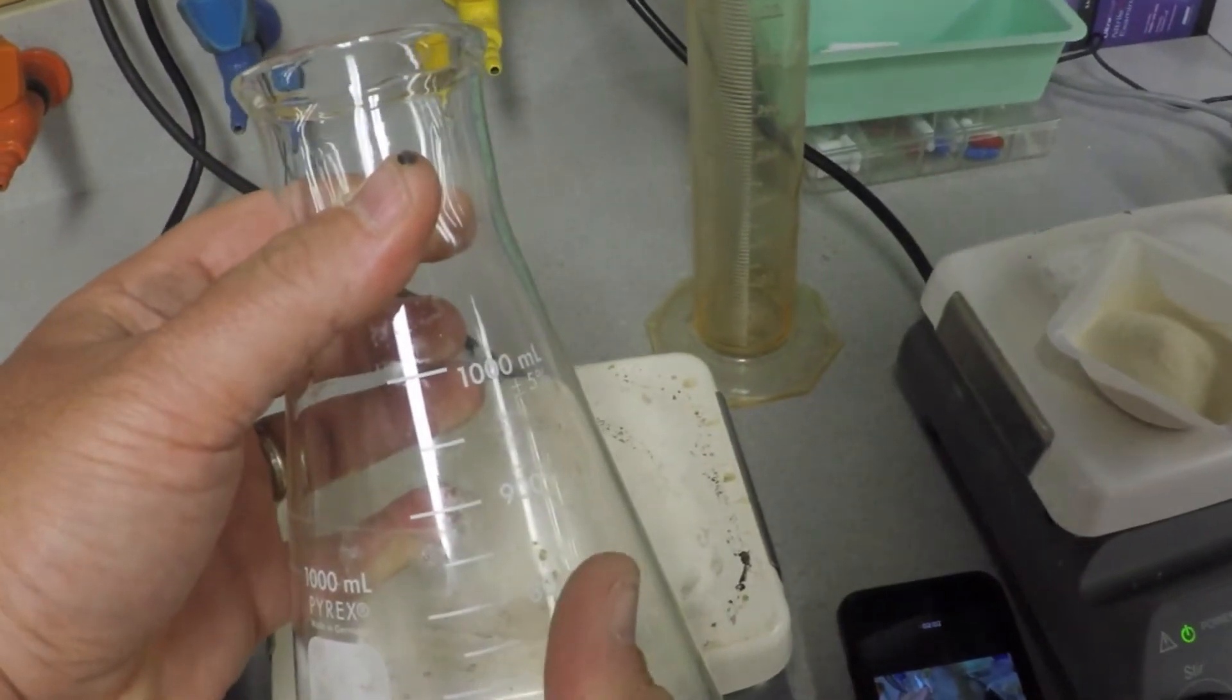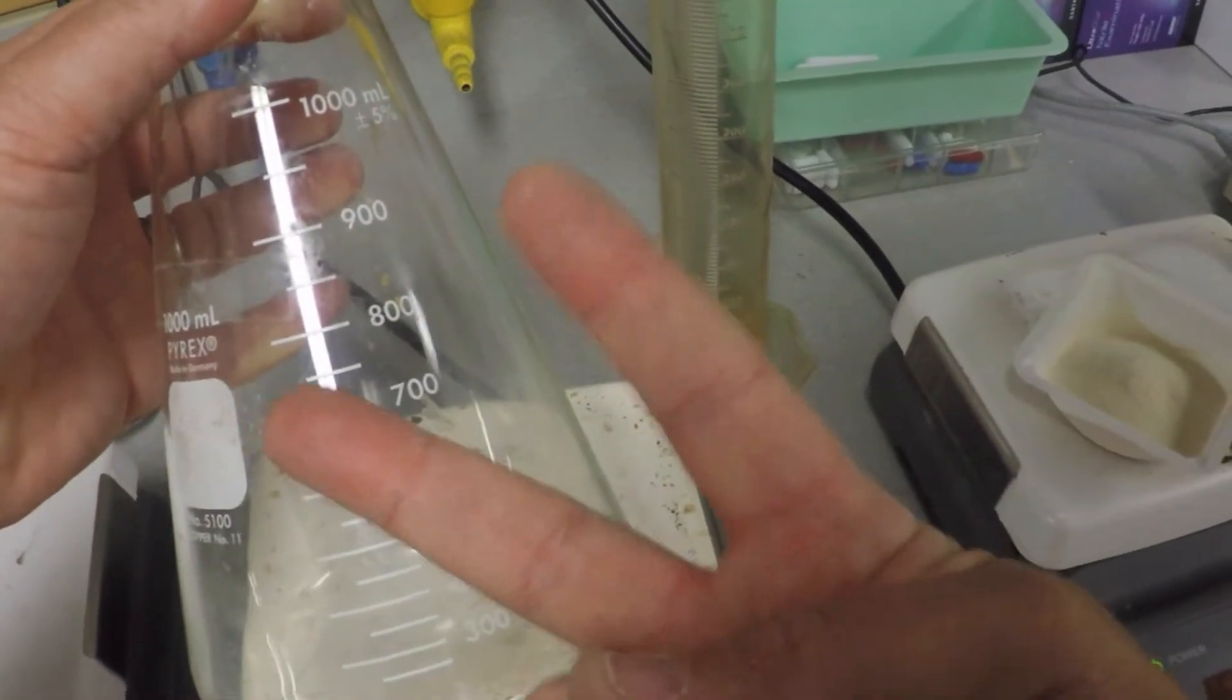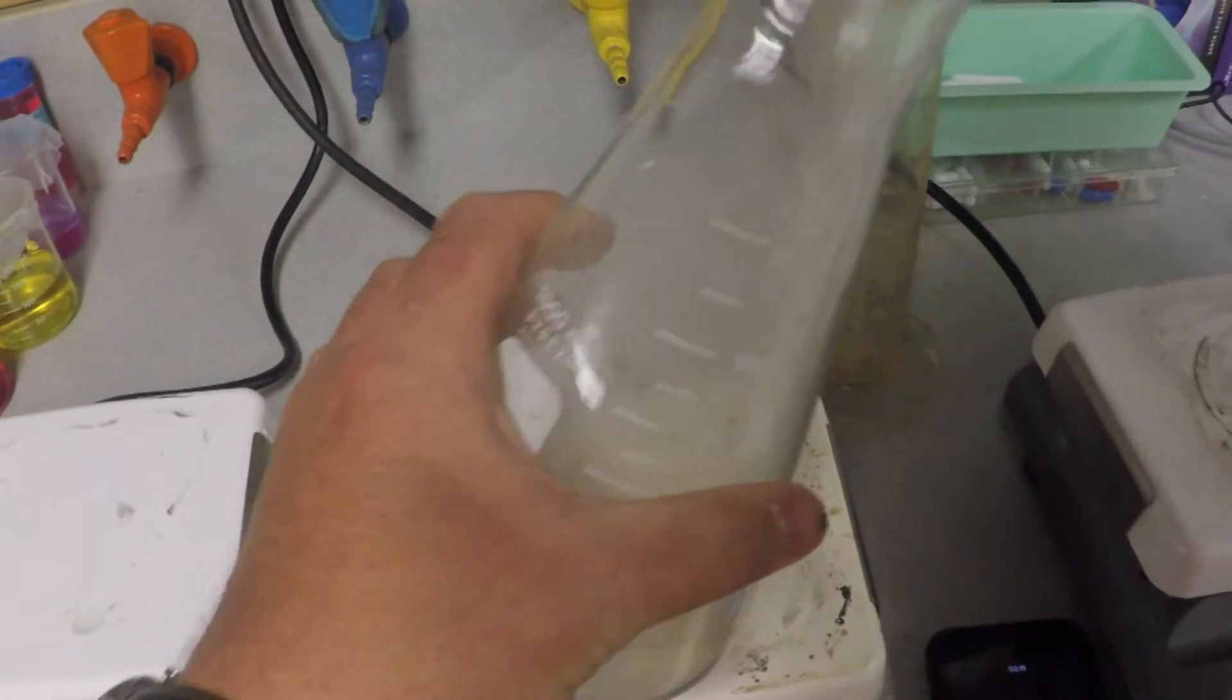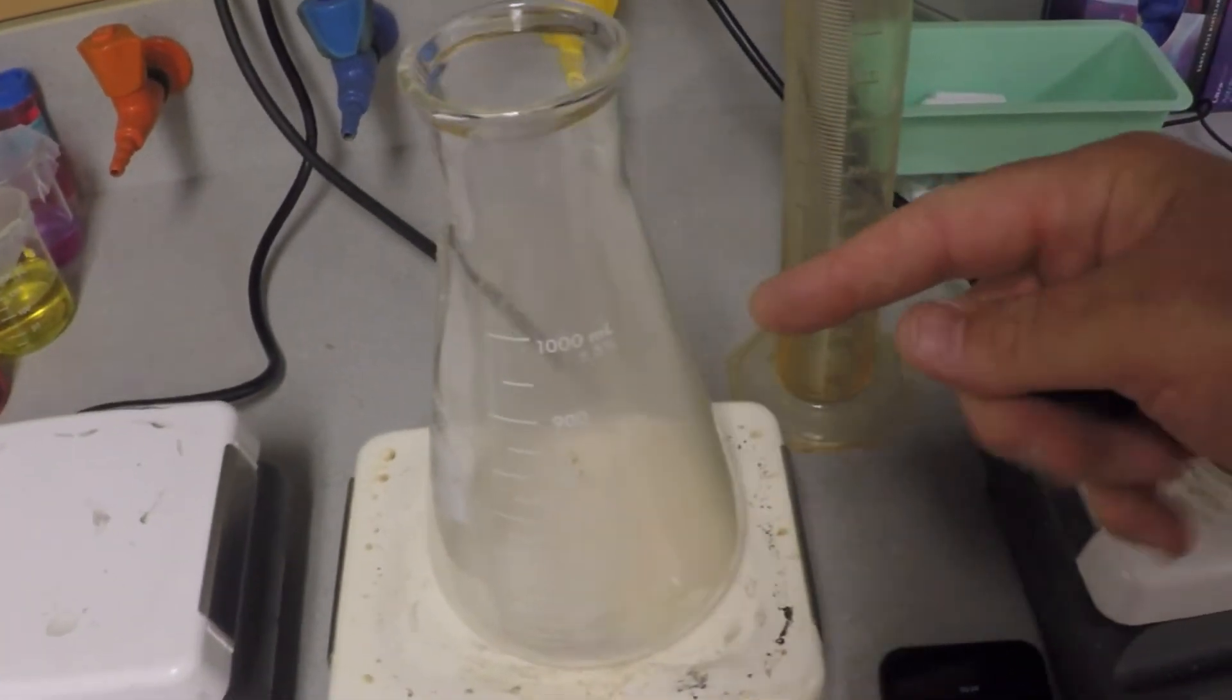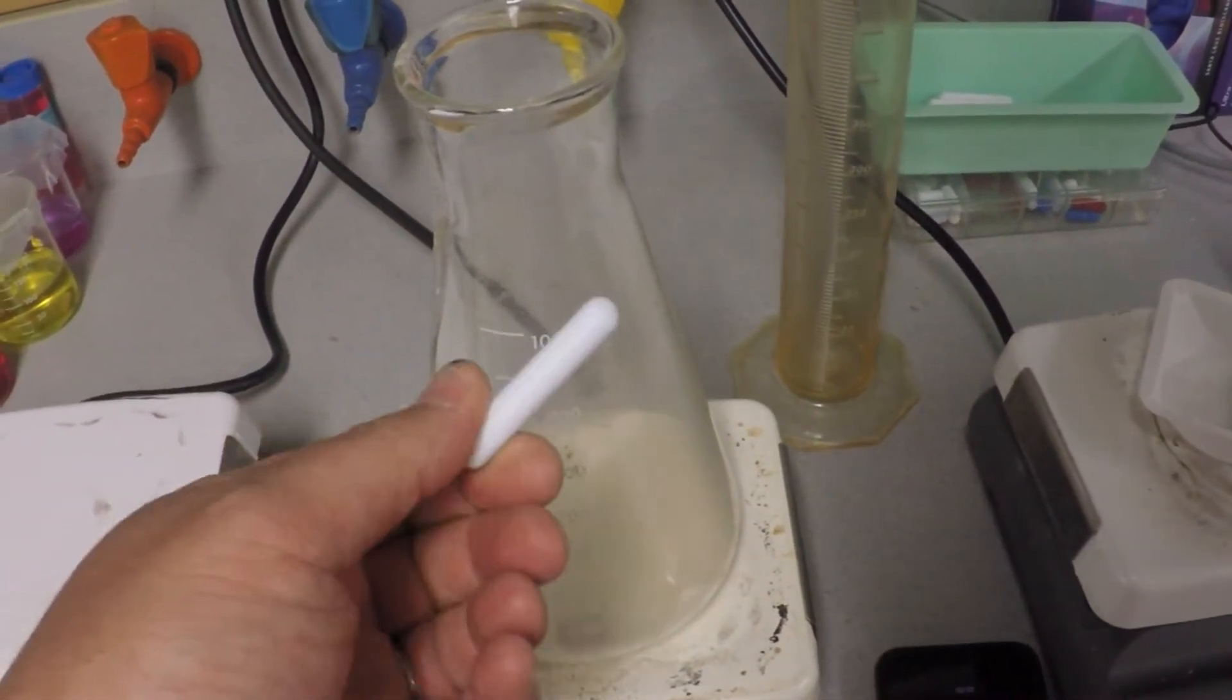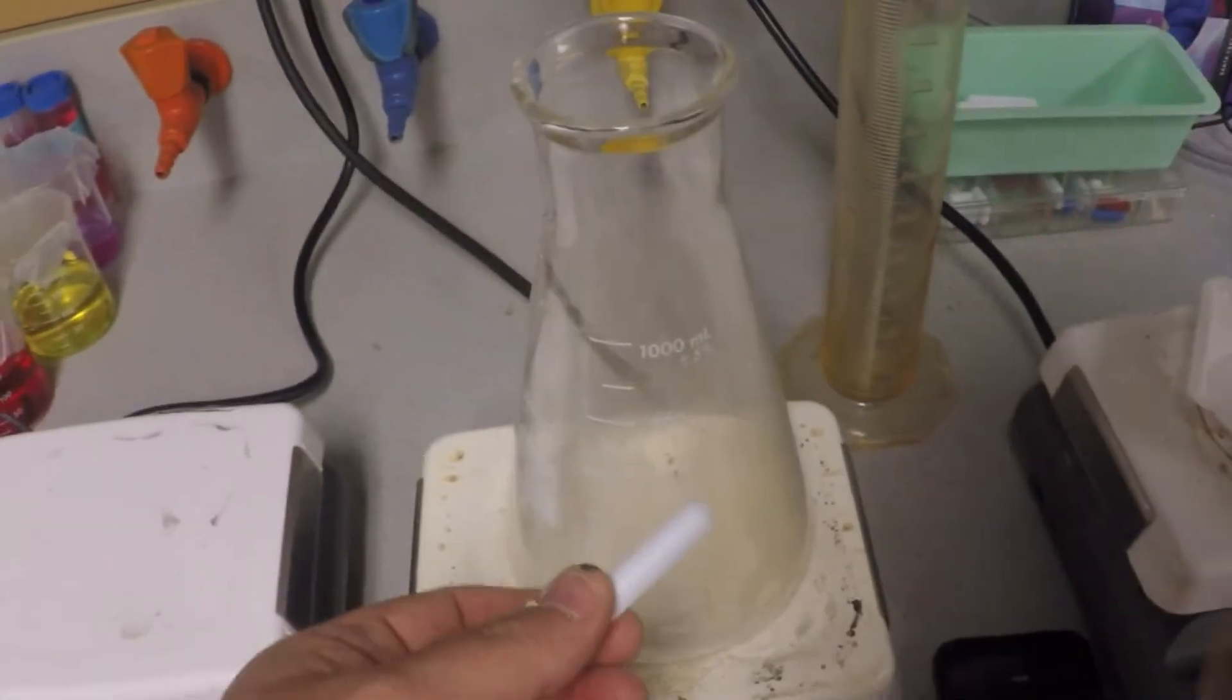So rule of thumb is twice the volume. Get a container that's twice the volume of what you're going to make. We're going to go ahead and stick this stuff in there. Now, because there's agar in here already, it will not dissolve till it's heated up. You could put a stir bar in this and let it spin around, but we're not going to do that.